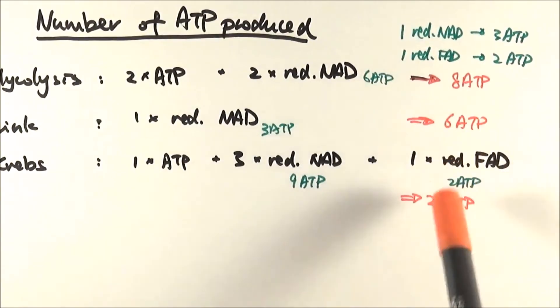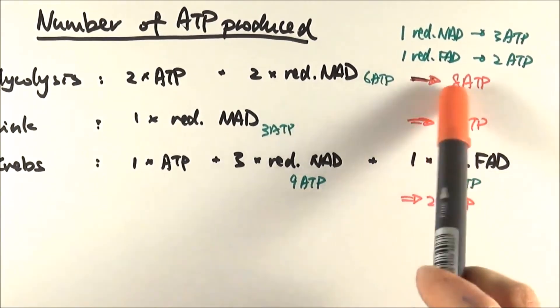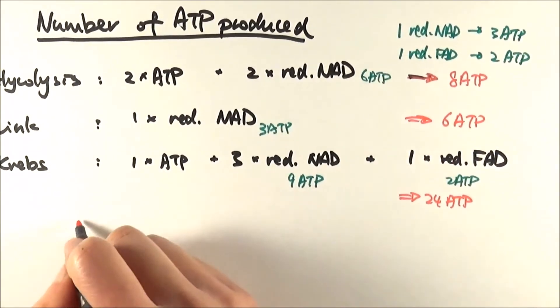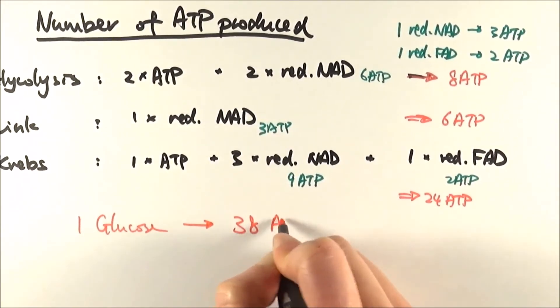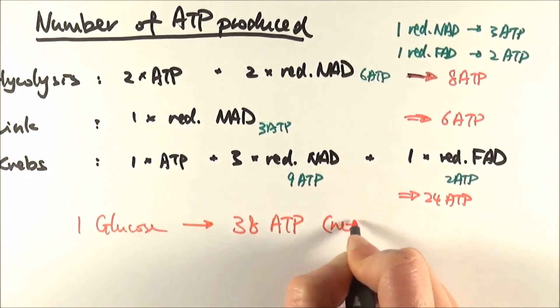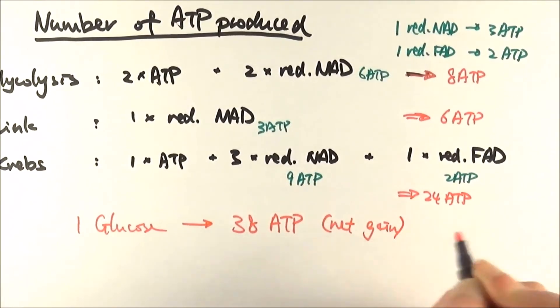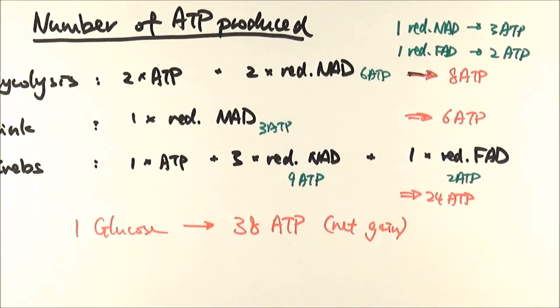And so counting all of these up, 24 plus 6 plus 8. And from 1 glucose molecule, we have made 38 ATP, and this is our net gain. We've already considered that we've lost 2 in the beginning.